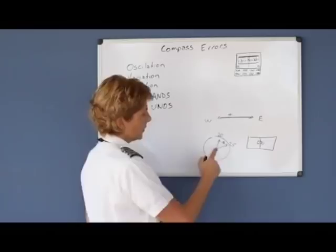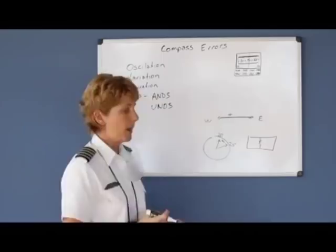If you decelerate, it turns south. So let's say that you're flying at 2500 RPMs and you pulled it back to 2000, and the compass was originally on east.